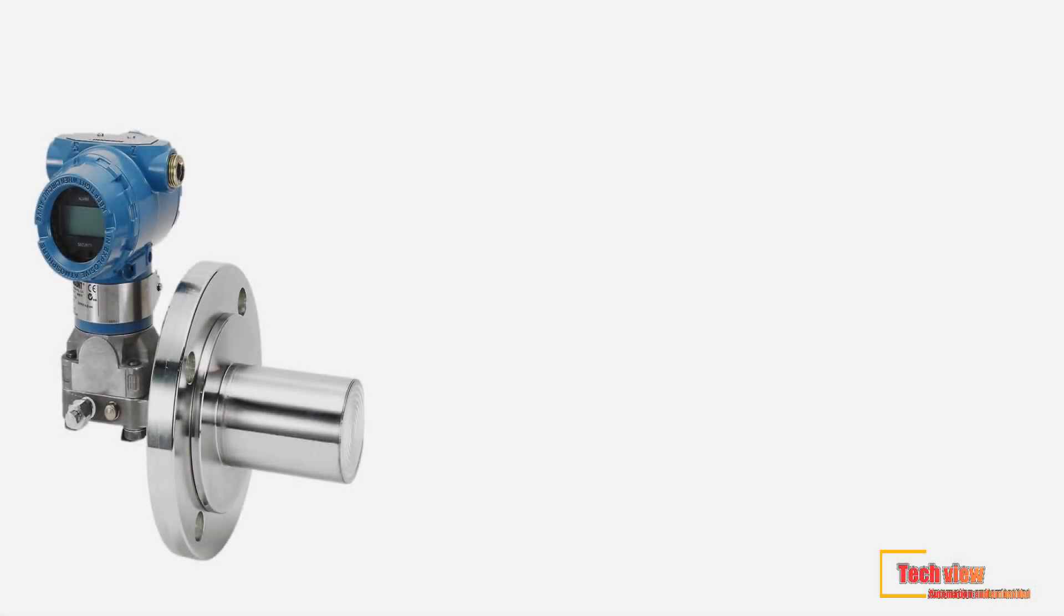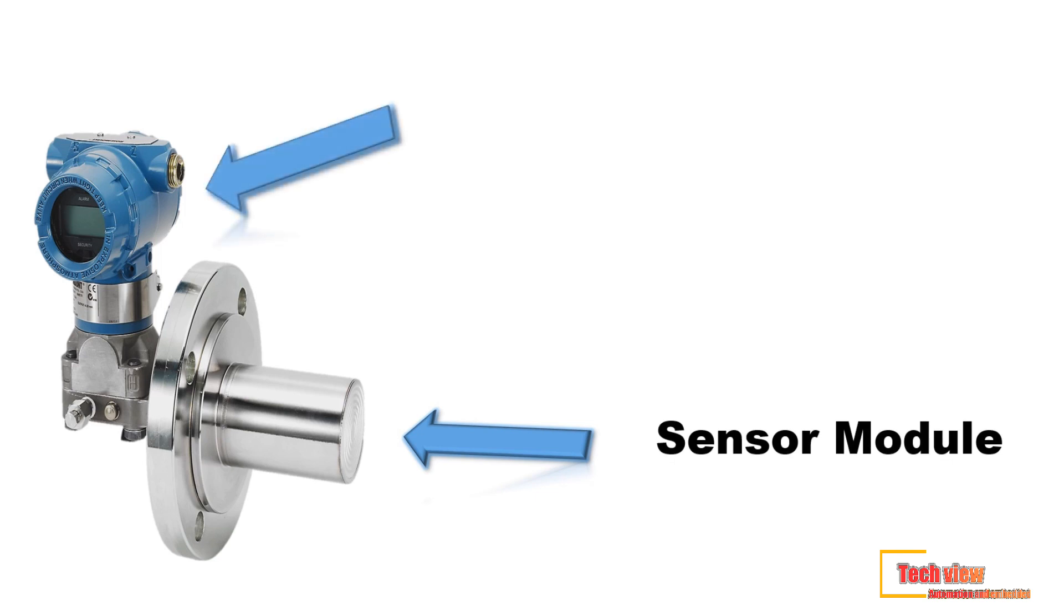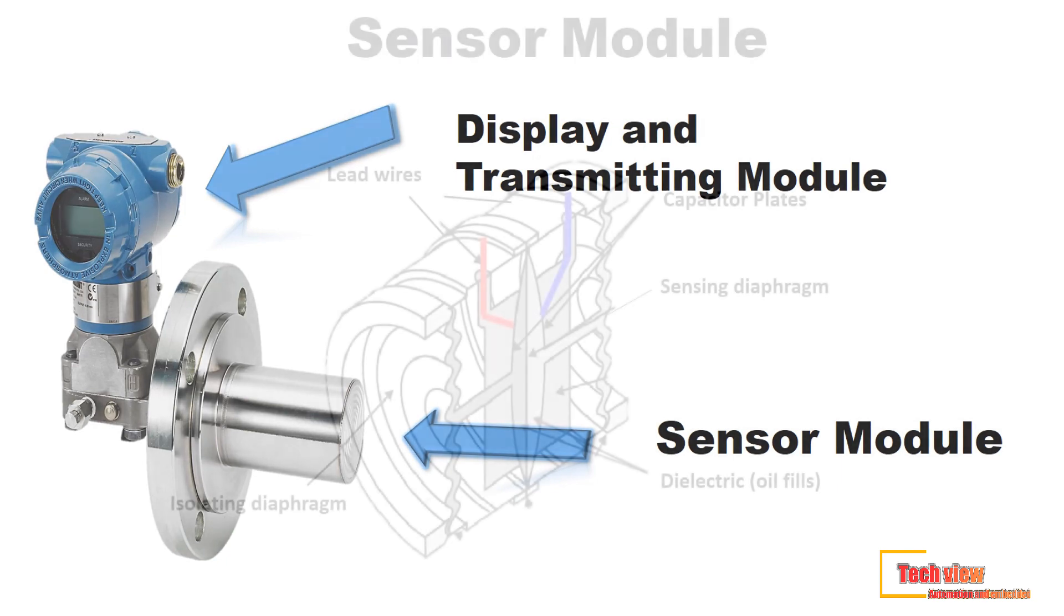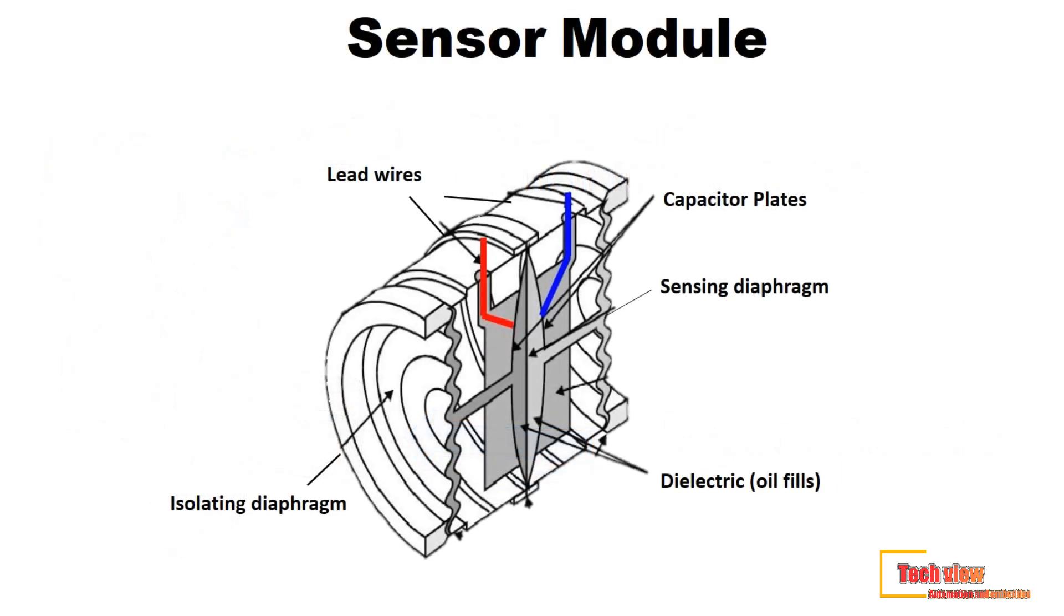A pressure transmitter consists of electronics connected to a sensor. We can find transmitters with many types of sensors on the market: capacitive, piezoelectric, resonant silicon, and more. Here you can see the capacitive sensor diagram, as it is the most common, although that doesn't make it the best.